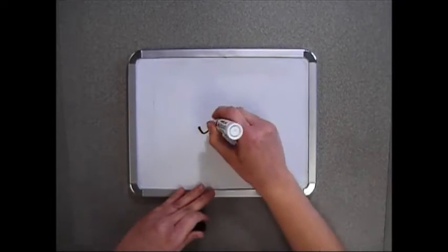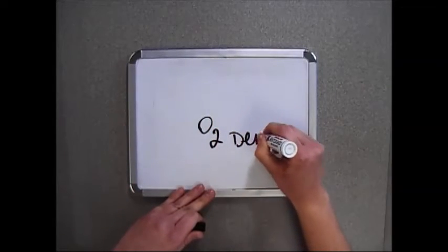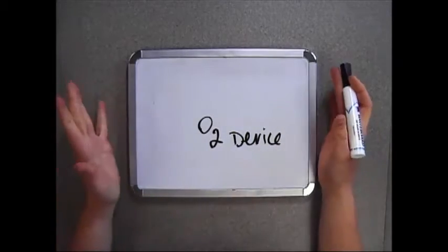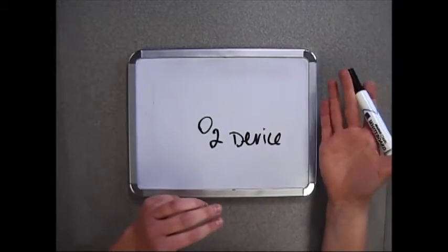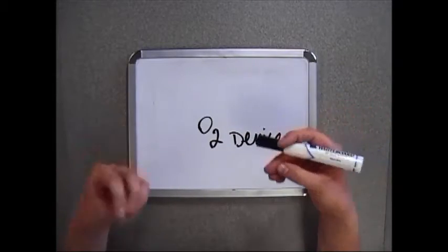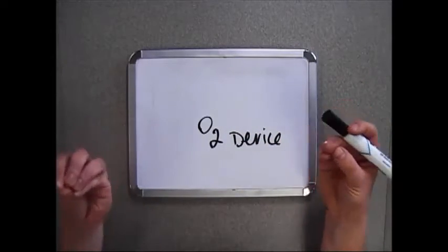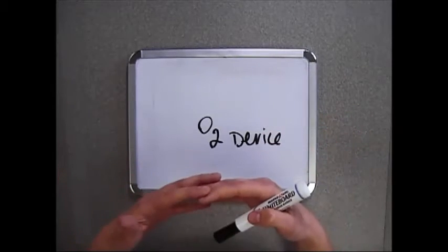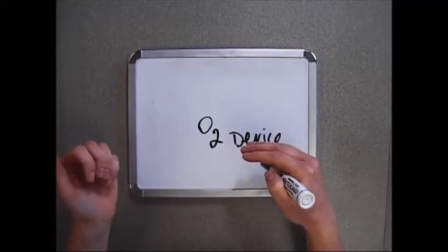So what is an O2 device? This is any device that is used to administer, regulate, or supplement the amount of oxygen a patient may receive. The expected outcome of any oxygen delivery device is to increase the oxygen level in arterial blood. This is referring to the oxygen that is bound to hemoglobin so that it can be transported and used within the body.